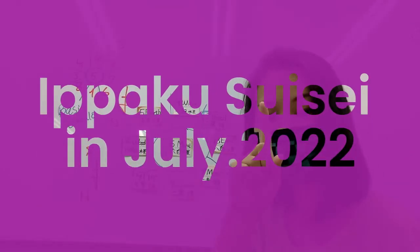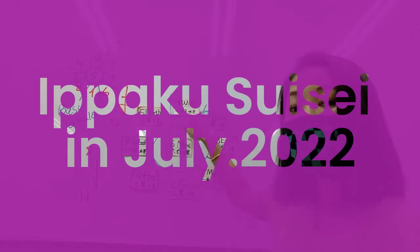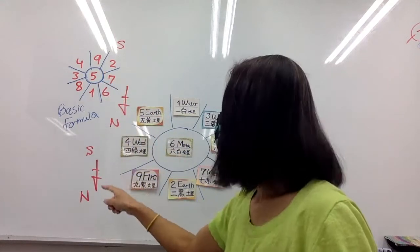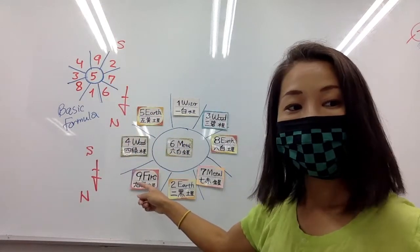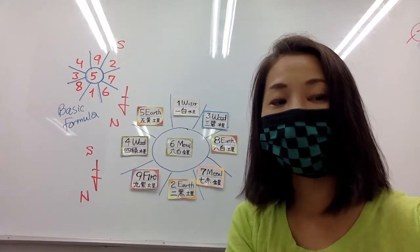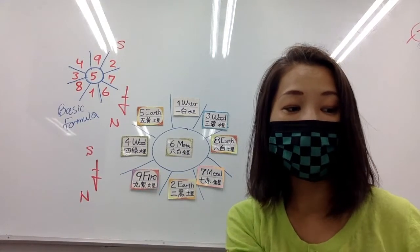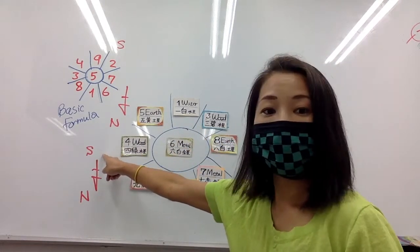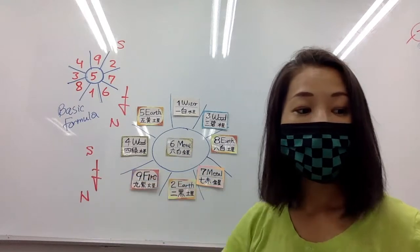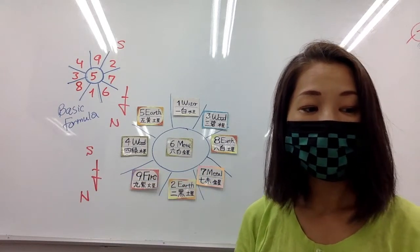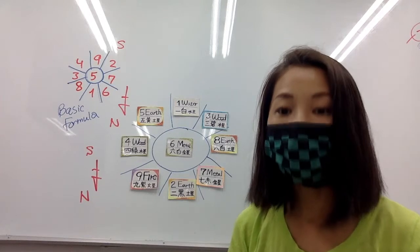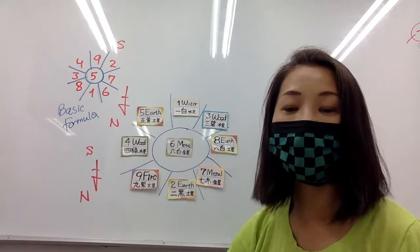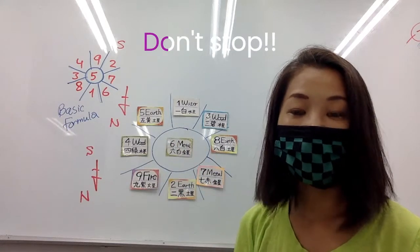First, Ipaku. One word, Ipaku Suisei is on Kyushikasei, nine star, nine carrier Tushikasei. So the point is on south, in the south. So we're very, very busy. In July, Ipaku person is very busy and don't stop.